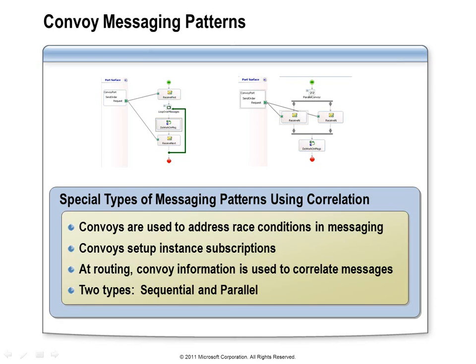In both convoy cases, the potential exists for multiple messages to arrive at exactly the same time. If the orchestration runtime simply carried out business as usual, it could create two instances of an orchestration, not realizing those messages should have been processed by the same instance. Fortunately, the orchestration engine knows how to accommodate these conditions — we just need to make sure we set up the receive shapes properly so that it can do its job. Let's look at these convoy patterns one at a time.